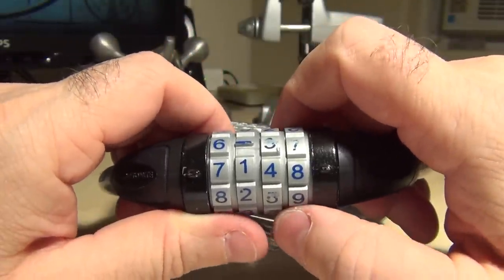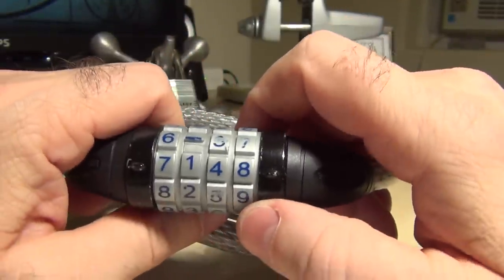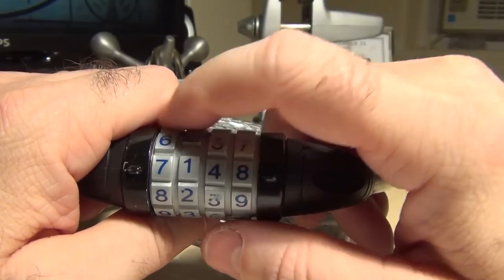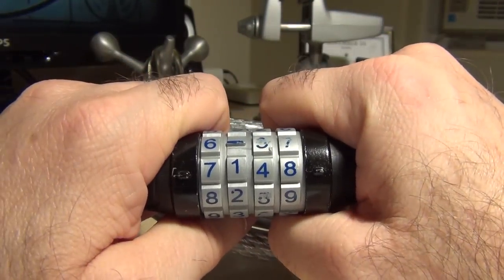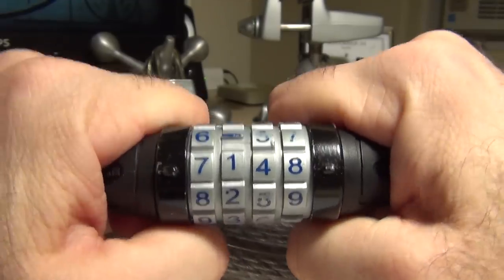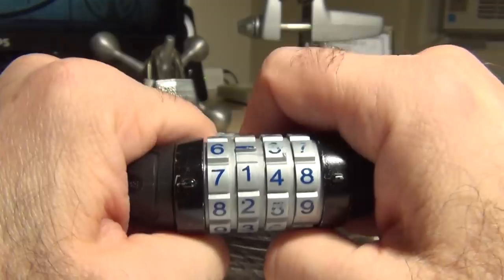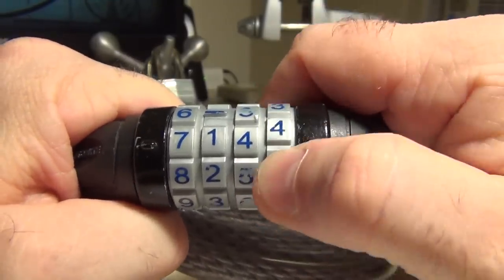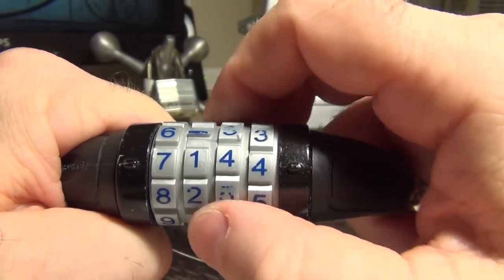What we have to do first off is we have to find two false gates and then one true gate for each of these wheels. You can find these by applying tension right in the direction of opening, so we're just gonna pull on each side and find binders here. It looks like four is one, looks like four-four.